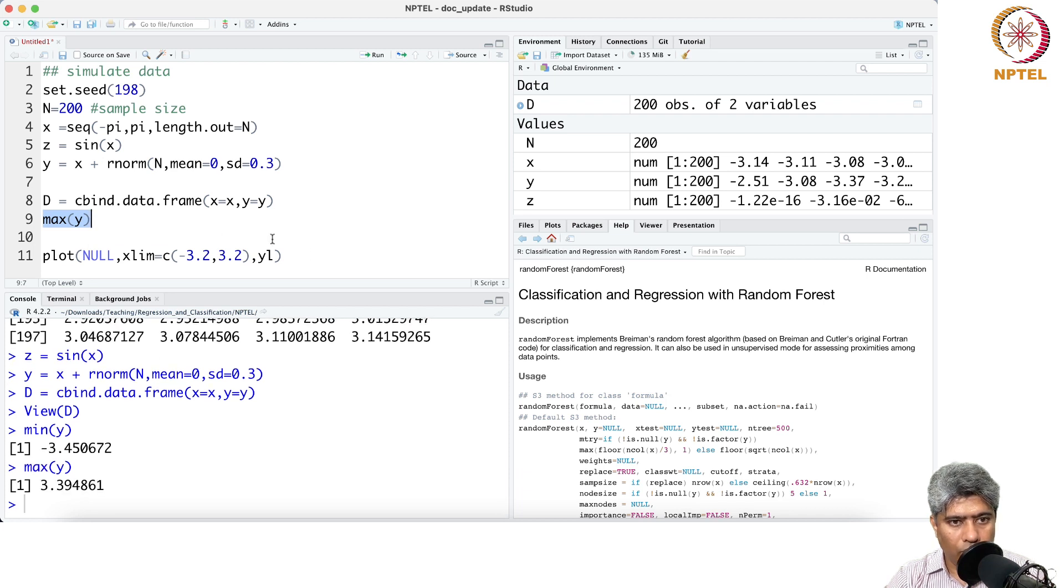X limit will be minus 3.2 to 3.2 and y limit will be, let us first check what will be the minimum and maximum of y. Minimum of y is negative 3.4 and max is also 3.4, so we can just take y limit equal to from maybe negative 3.5 to 3.5, and x lab equal to x and y lab equal to y.